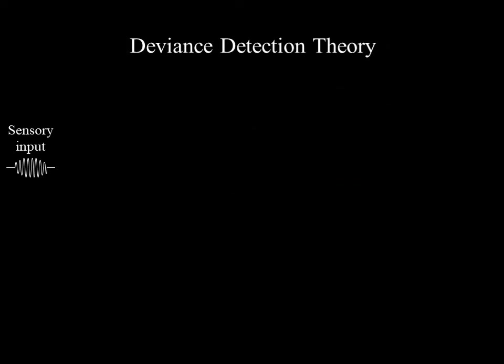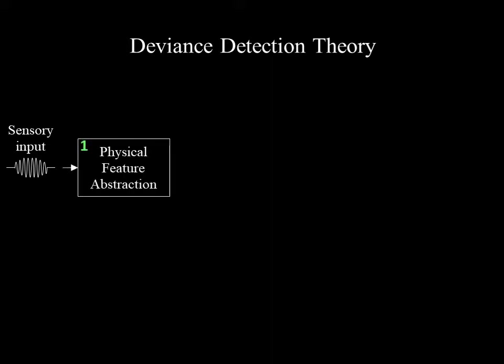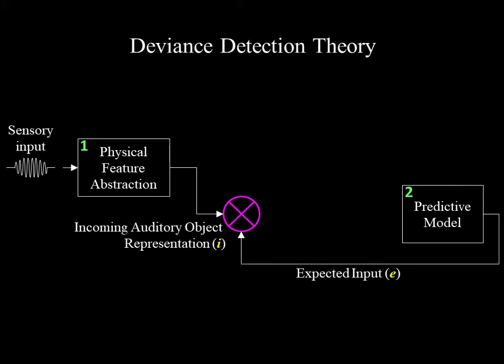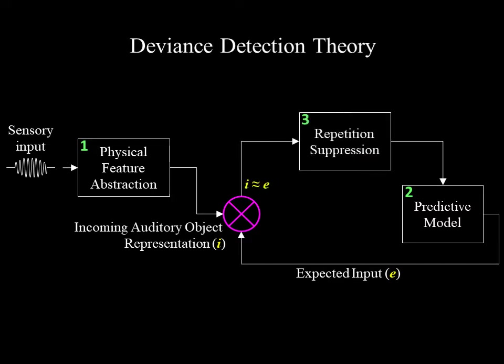We'll start with the deviance detection theory, which is very popular. The brain extracts the physical features of auditory input and represents them as an abstract auditory object. This incoming auditory object is then compared with an expected input generated by a predictive model. If the incoming object is similar to the expectation, repetition suppression occurs where the ERP response becomes smaller and the model is reinforced. If the incoming object is sufficiently different from the expectation, a change detection mechanism is triggered and the predictive model is updated. It is suggested that mismatch negativity reflects the deviance detection part of this process. However, other factors are likely responsible for differences between standard and physically different deviant ERPs.